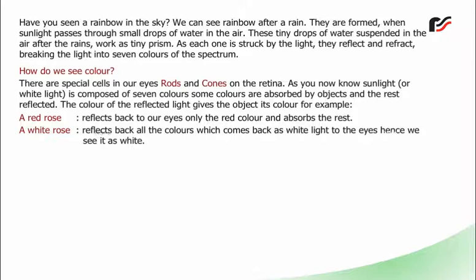A white rose reflects back all the colors, which come back as white light to the eyes, hence we see it as white. A black cloth is seen as black because it does not reflect to our eyes any color.